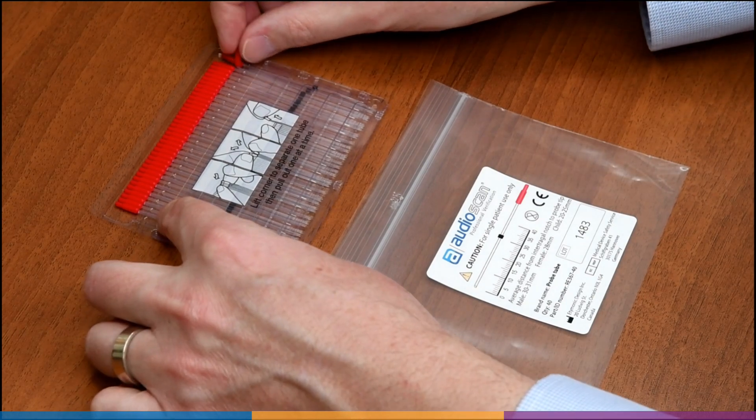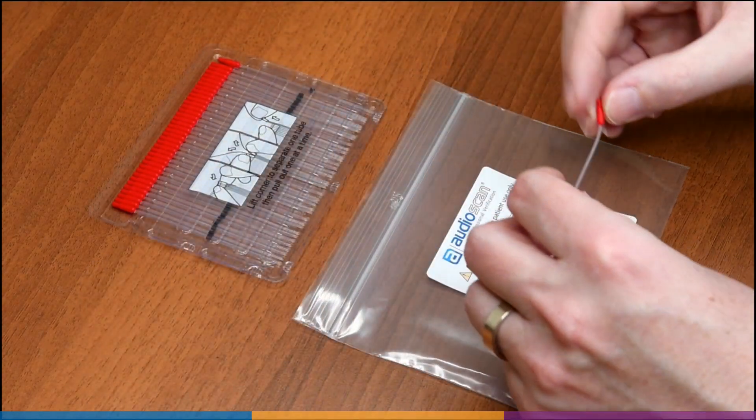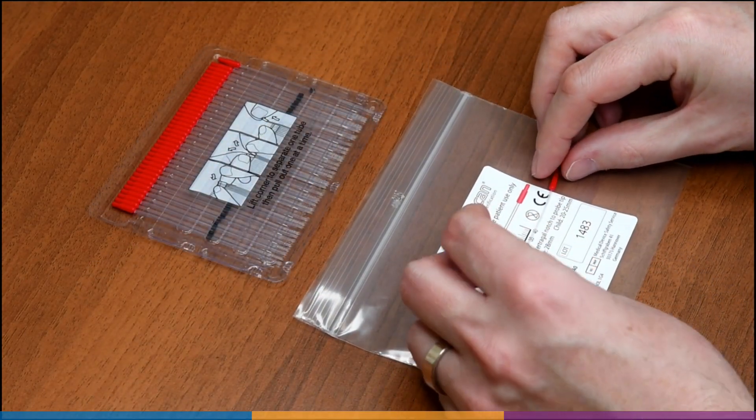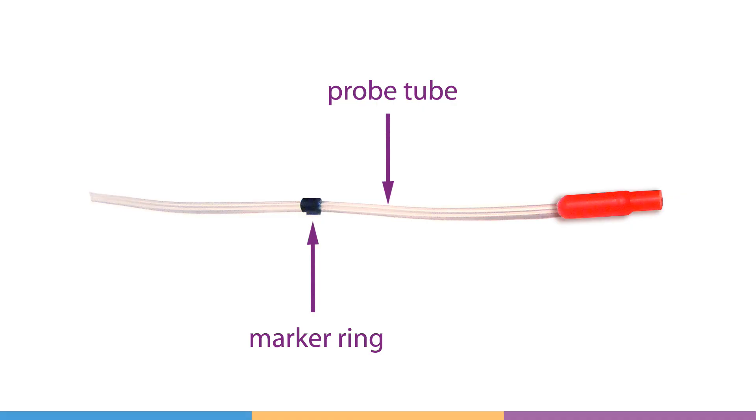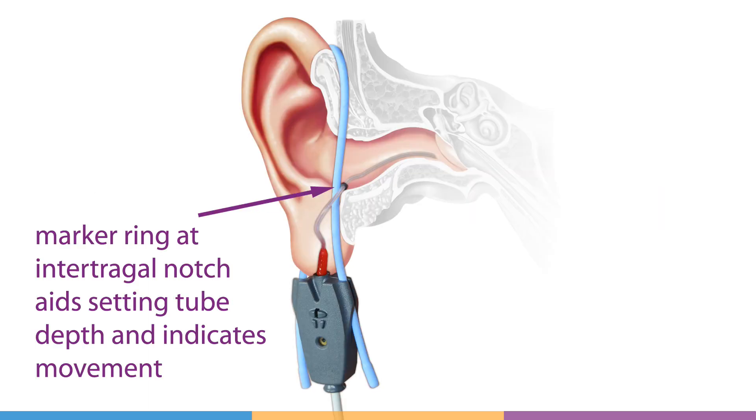Using a new probe tube, set the black marker ring to the average depth indicated on the probe tube packaging. While a ring is not required for positioning with ProbeGuide, it can help show inadvertent movement of the probe tube during later hearing instrument or foam tip insertion.